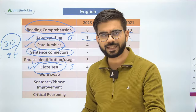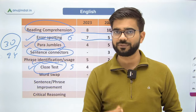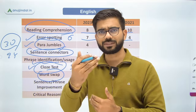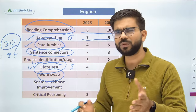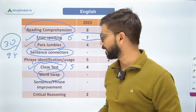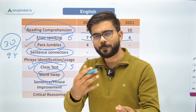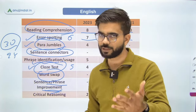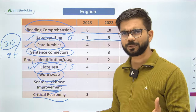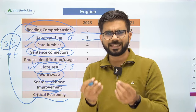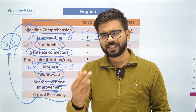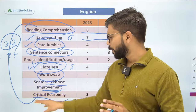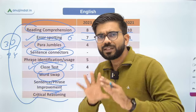Phrase identification — phrases are given and you are asked for their right usage, or you have to fill phrases in the blank. Word swap — two words are given in two sentences and you have to identify which two words to swap so that the sentence meaning is correct. RBI brings new varieties of questions every year. Sentence/phrase improvement — a sentence is given with 5 options and you have to tell which is a better improvement. Critical reasoning is also there — it is very much connected to reading comprehension, where you are given sentences and asked which best conveys the message, or which is the odd one out. Broadly, that is the English section.